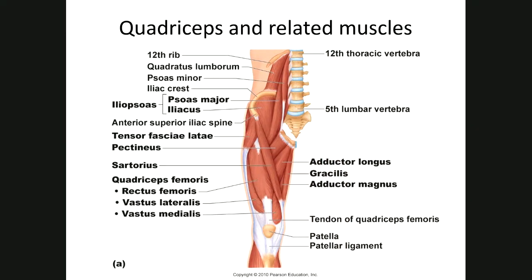Let's go into a little more detail on the hip and thigh. This is the iliopsoas, made up of the psoas major and the iliacus. Here is your tensor fasciae latae, which ends with a lot of fascia on the outside. We have pectineus, adductor longus — which pulls the leg toward you — and adductor magnus.